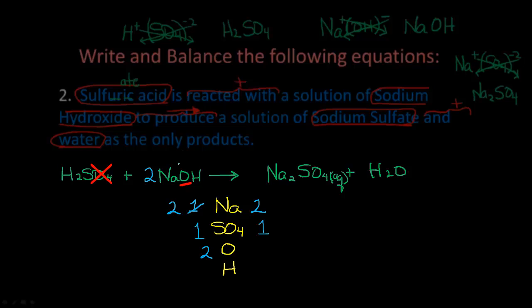Now oxygens — we do not count the oxygen inside SO₄ because we already accounted for that. From 2 NaOH, we get two oxygens on the reactant side. On the product side, we do not count the oxygen in SO₄ again — we only count the oxygen in H₂O, which is one. We need two oxygens, so we put a coefficient of 2 in front of H₂O.